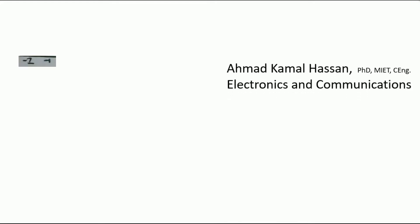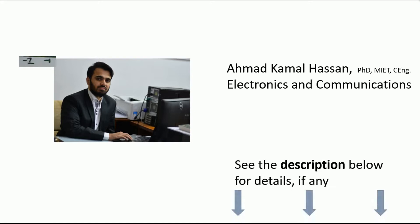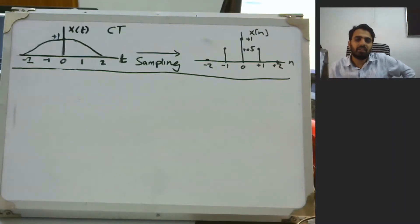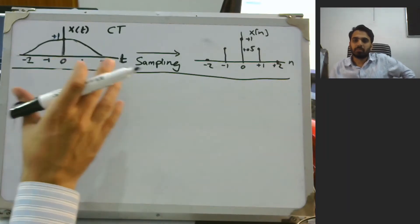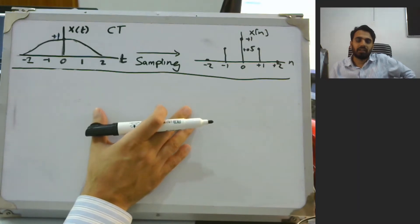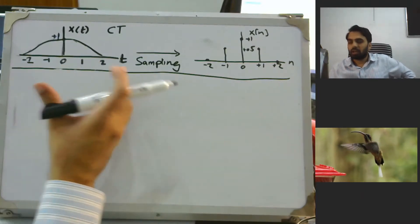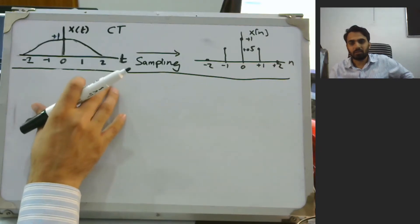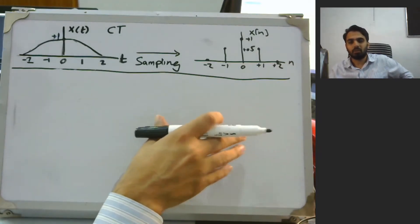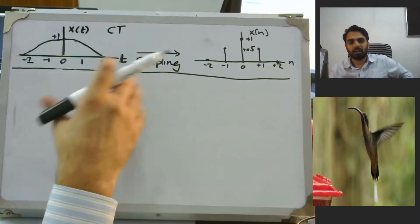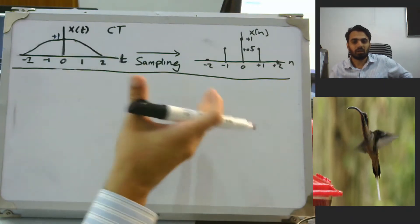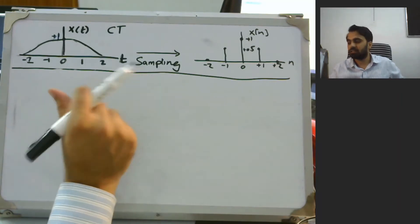Next we look into operations on the time dependence of both continuous-time and discrete-time signals. To make the subject area a little bit interesting, I have taken two examples: the first example will be done on the whiteboard, and the second example is a five-second video of a hummingbird. As I perform time-domain operations on these signals, this video will be correlated — if I amplitude scale, time shift, or time scale, the hummingbird video will also be time shifted and time scaled. Let us look into the first operation: amplitude scaling.